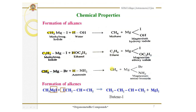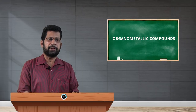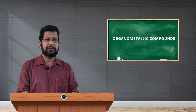In all these cases, methane, ethane, etc. are formed — these are all alkanes. It is also possible to prepare alkenes from a Grignard reagent. For example, methyl magnesium iodide is treated with allyl iodide; the magnesium iodide combines with iodine forming magnesium iodide, and we get 1-butene (CH₃-CH₂-CH=CH₂), which is an alkene. We will continue the remaining synthetic applications in the next session. Thank you.